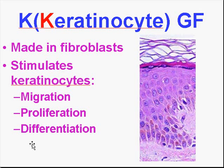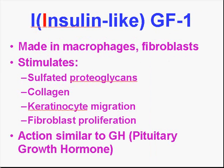The stroma stimulates the epithelium and vice versa. Let's talk about the insulin-like growth factor. It's made in macrophages and fibroblasts, and it stimulates a lot of extracellular matrix production like the sulfated proteoglycans, but also collagen, keratinocytes, and fibroblasts. When it's stimulating all those different types of cells, you would think it would be an action very similar to HGH or pituitary growth hormone — and in reality, it has a very similar action.